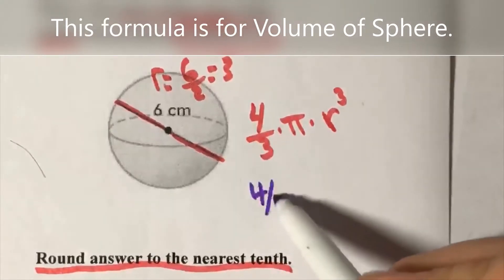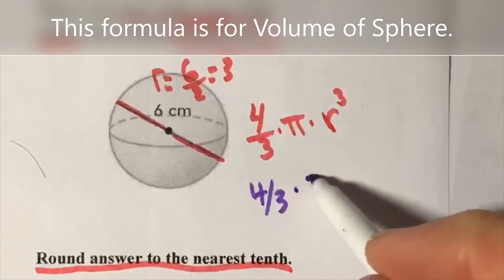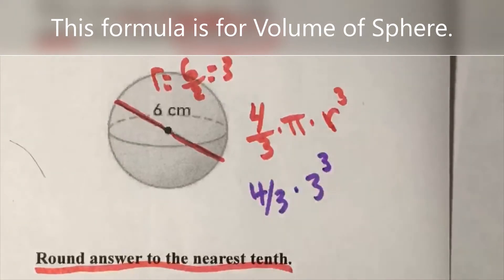So I'm going to go ahead and do four divided by three times three to the third. Now to take care of it, write that down. You'll need to put this in the calculator and get an answer.